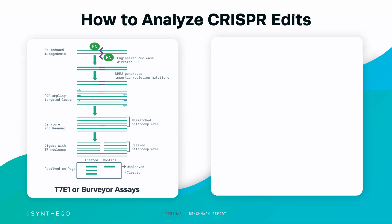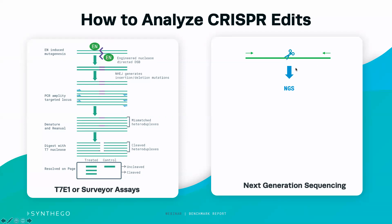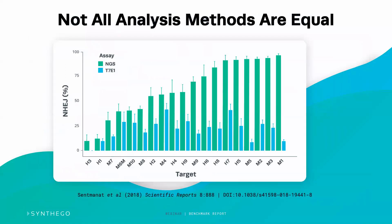Another quantitative methodology is amplicon sequencing, where you PCR amplify around the editing site and send that amplicon for next-generation sequencing to sequence every piece of DNA and determine editing efficiency based on how many DNA strands were impacted. A published report from last year compared NGS with the T7E1 or Surveyor assays, with each data point representing the same population of cells assayed by either method.